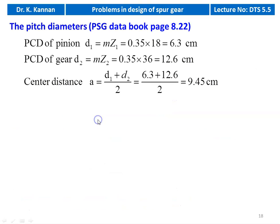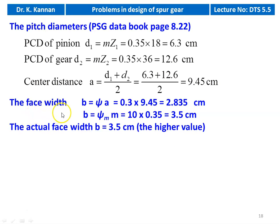PCD of pinion D1 = m × Z1 = 0.35 × 18 = 6.3 cm. PCD of gear D2 = m × Z2 = 0.35 × 36 = 12.6 cm. Center distance A = (D1 + D2) / 2 = (6.3 + 12.6) / 2 = 9.45 cm. Face width: B = ψ × A = 0.3 × 9.45 = 2.835 cm; B = ψm × m = 10 × 0.35 = 3.5 cm. Take higher value: B = 3.5 cm.